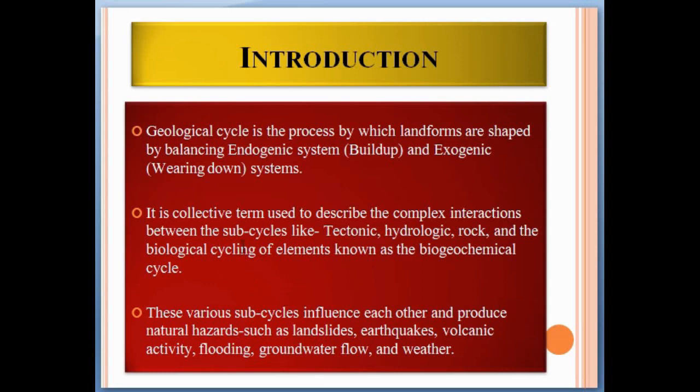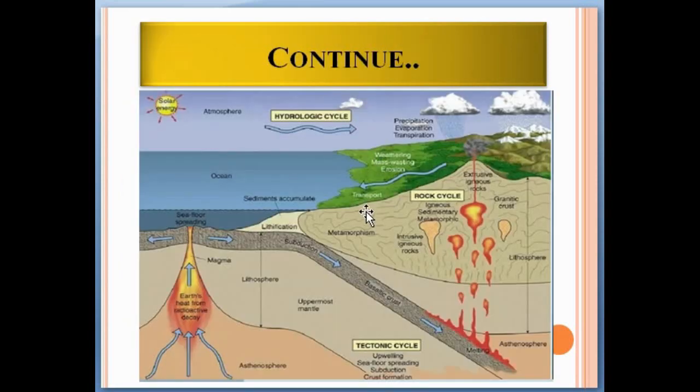See here, this photo is actually showing a geologic cycle. You can see here the hydrogeologic cycles, rock cycles, and tectonic cycles. Hydrologic cycles involve rainwater and running water. As you can see here, when rainwater reaches the ground, precipitation, evaporation, and transportation occurs.